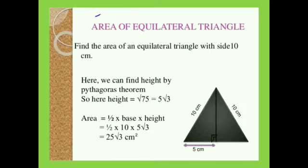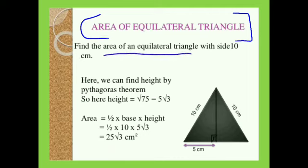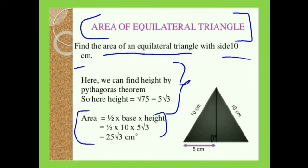Next, we have the area of equilateral triangle. Here also we have to find the area when the side is given. We will use Pythagoras theorem to find the height. After finding height, we can easily find the area by using half into base into height.